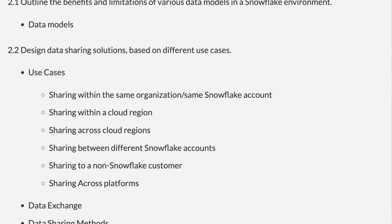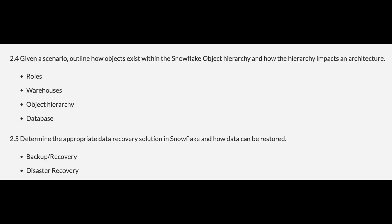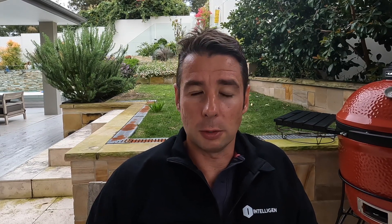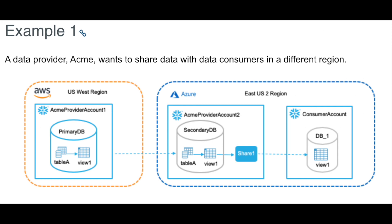Next, let's talk about the Architecture domain, which makes up 25% of the certification. Data sharing is going to be a big part of it — it's obviously a major competitive feature for Snowflake, so they'll make sure you know how it works in the real world: cross-cloud, cross-region, and what the limitations are. For example, if you have a Snowflake account on Azure and one on GCP, you can't share data directly between them. You need to replicate the data from the Azure account to a GCP Snowflake account first, and then configure your data sharing setup. Make sure you understand the sequence: replicate data to the same cloud provider as your data consumer before creating the data share and setting up access.